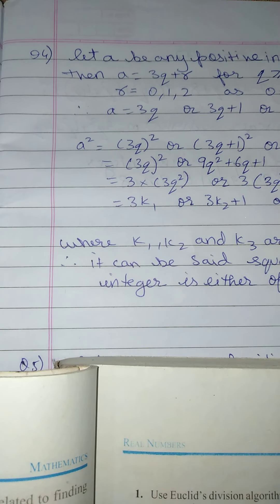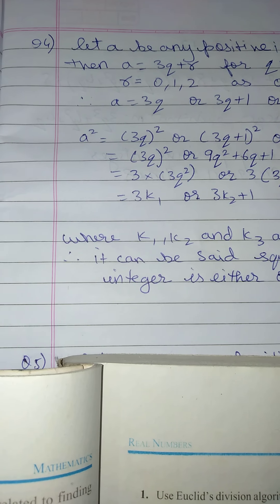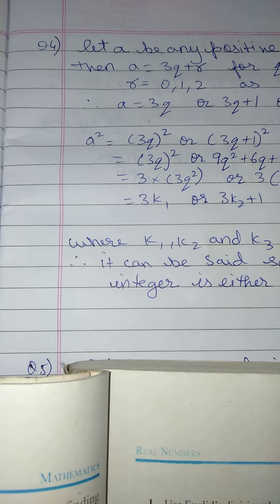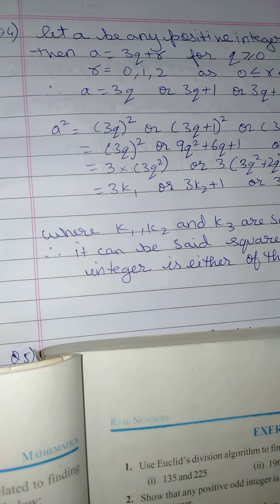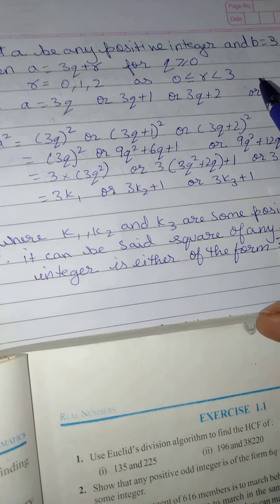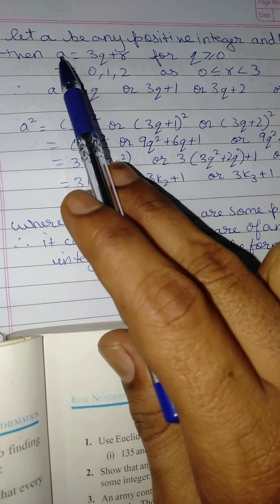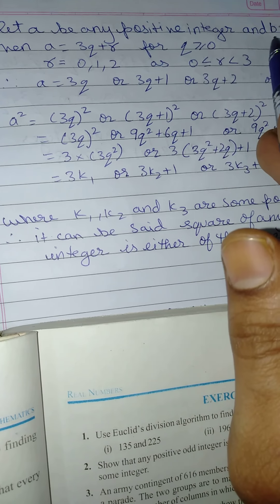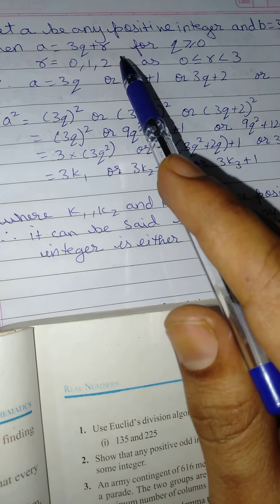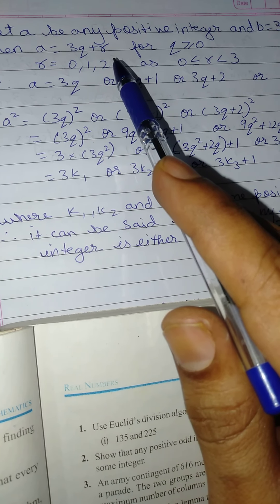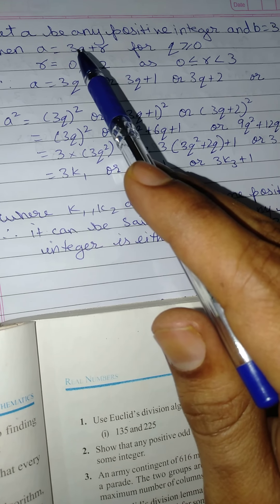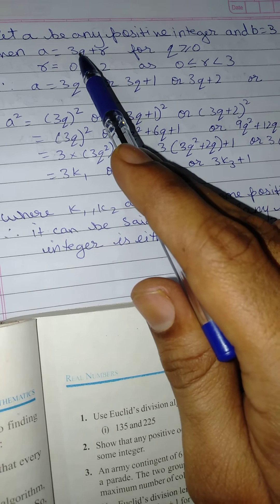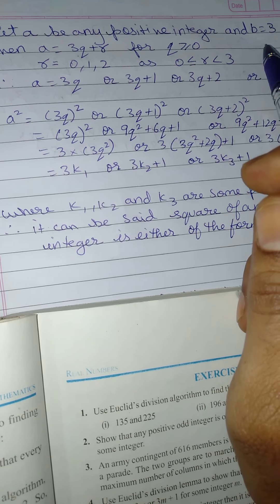Our question was to prove that the square of any positive integer is of the form 3m or 3m plus 1. So we will let a be any positive integer and b equal to 3, because it is asked in the question that it is of the form 3m or 3m plus 1. Taking the general form of Euclid's division lemma, a is equal to bq plus r, and since b equals 3, we substitute b as 3.